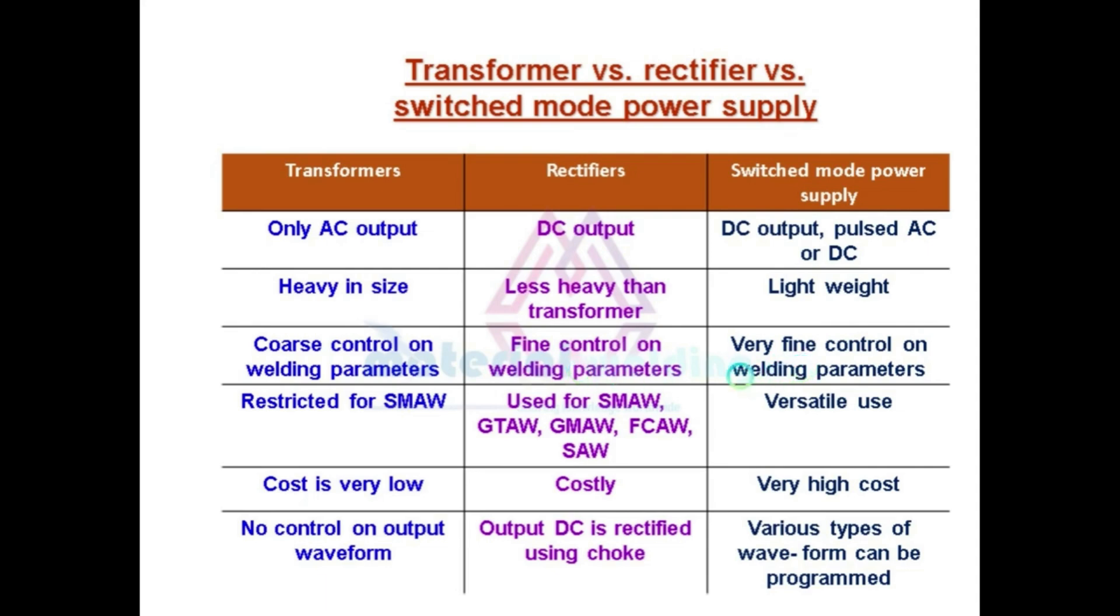Welding transformers are mostly used for shielded metal arc welding. Rectifiers are for versatile use. Transformer costs are very low while the switch mode are the costliest one. In transformer we do not have any control on output waveform. In rectifier we can rectify using a choke for a smooth thing only. While in switch mode we can program the waveforms for different purposes.